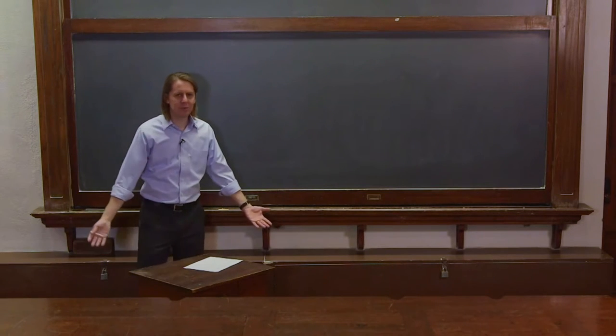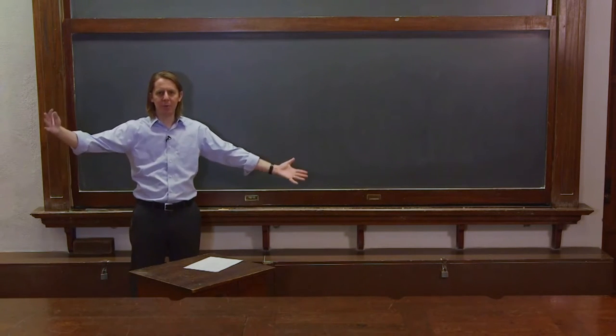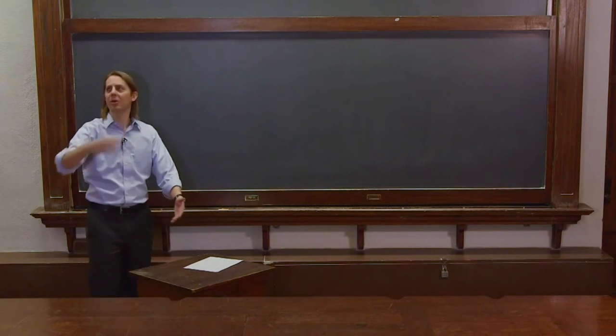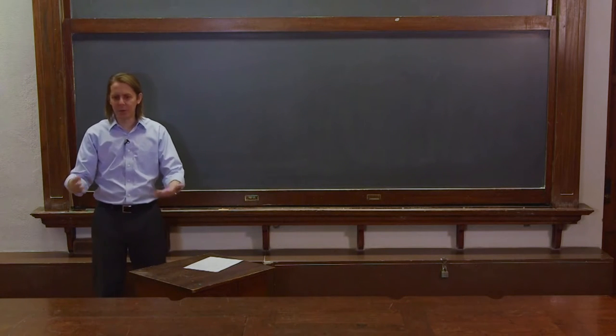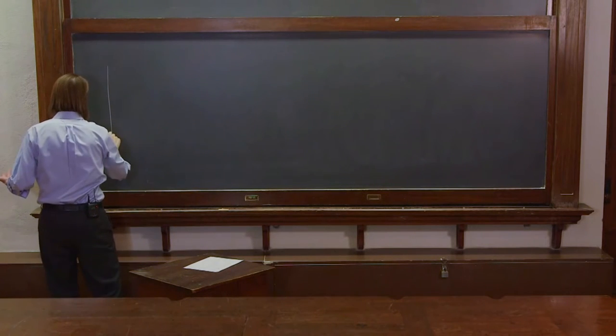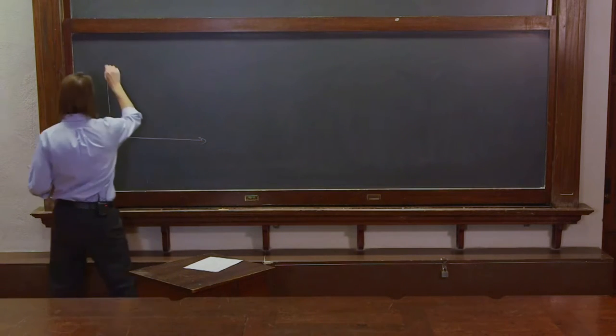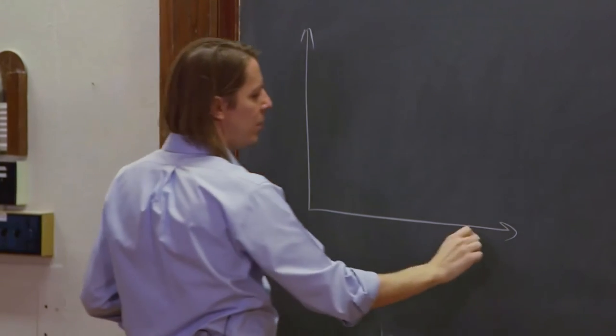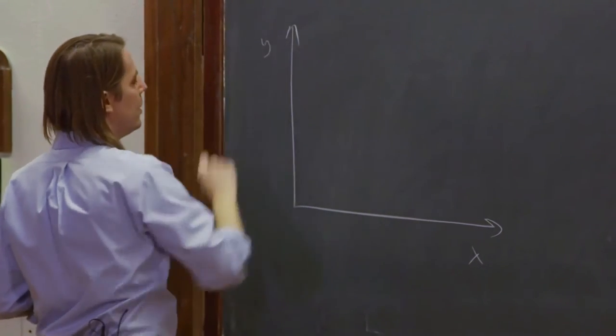So let's ask ourselves, what happens when two plane waves overlap? So plane wave coming this way, plane wave going that way, they overlap, what do they do? So let's draw them real quick first. Say we're going to be anywhere in space, X and Y, and Z for that matter. We don't really care.